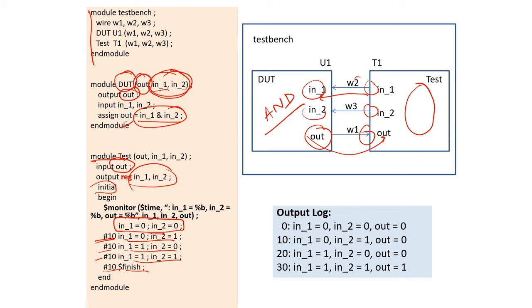To check the output, you use the $monitor system task. With $monitor, you can monitor signals IN1, IN2, and OUT — it will print whenever any of those values change. So at time 0 you get 00 → output 0; at time 10 you get 01 → output 0; at time 20 you get 10 → output 0; at time 30 you get 11 → output 1. You are confident the AND gate is working as expected.